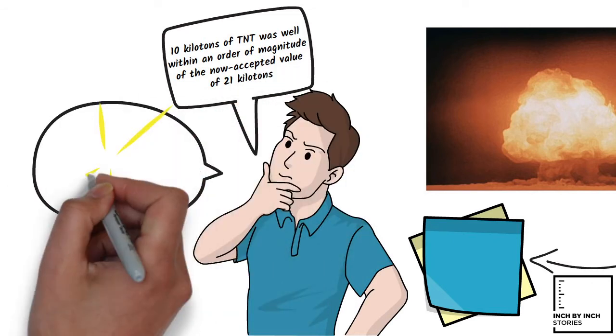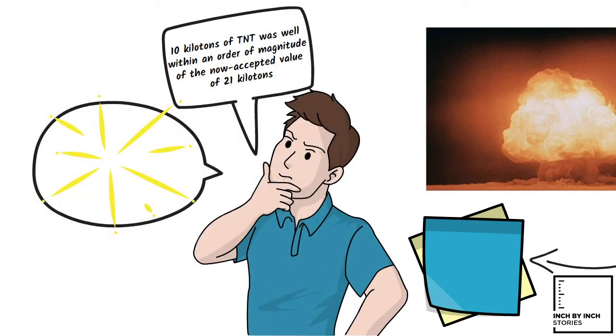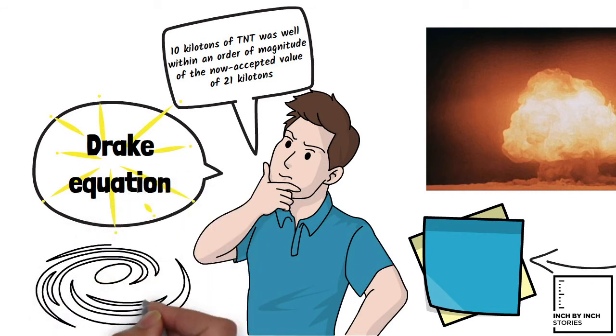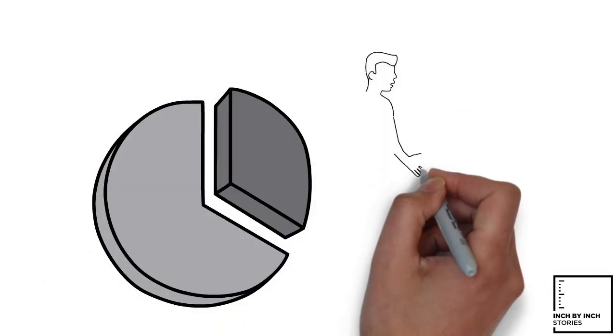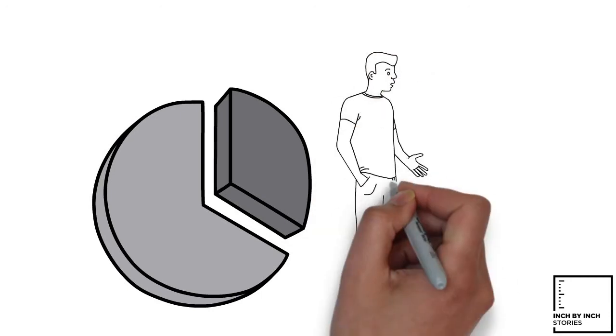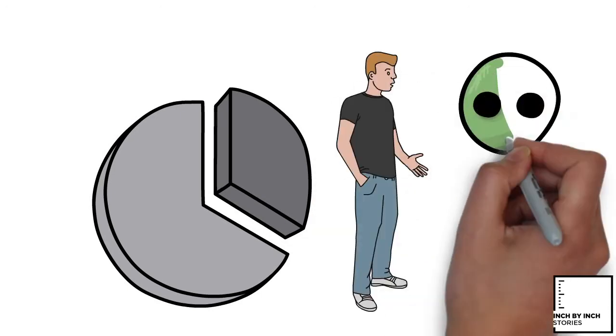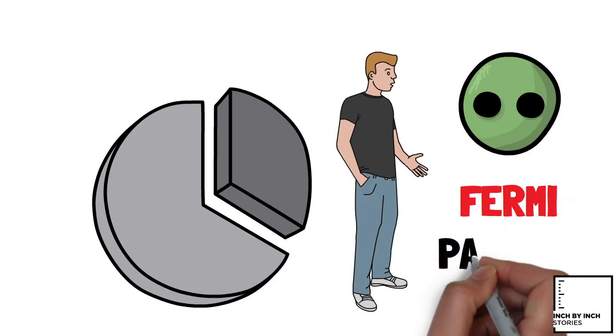But possibly the most famous Fermi question is the Drake equation, which seeks to estimate the number of intelligent civilizations in the galaxy. The basic question of why, if there were a significant number of such civilizations, ours has never encountered any others, is called the Fermi paradox.